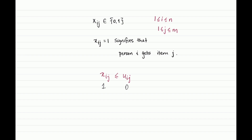Our goal was an FPT algorithm in the number of people n, but the number of variables introduced here is the product of n and m, so it depends also on the number of items, which can be much larger than n. Therefore, this algorithm, while correct, does not have the running time we are looking for. We need a tighter formulation using fewer variables — either modify the formulation, or come up with reduction rules that can bound m as a function of n.